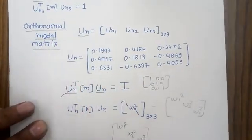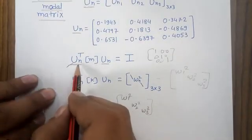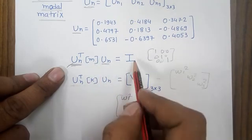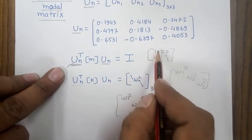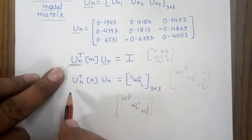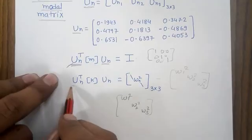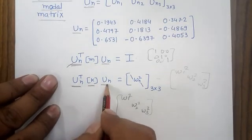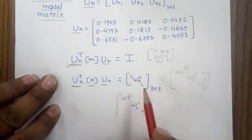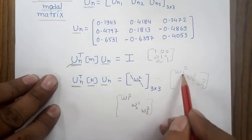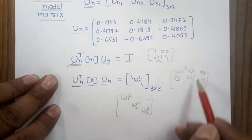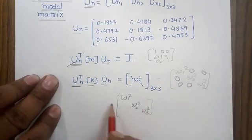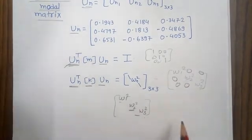The property of the orthonormal modal matrix is that when multiplied with the mass matrix, it yields an identity matrix with ones on the diagonal. When the orthonormal modal matrix is applied with the stiffness matrix, it yields a diagonal matrix containing the three natural frequencies on the diagonal.